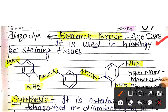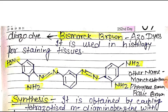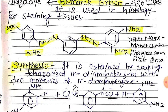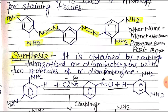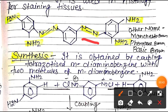This azure dye is used in histology for staining tissues. The structure of Bismarck brown is given as well. This is the structure. Two azo groups are present here.